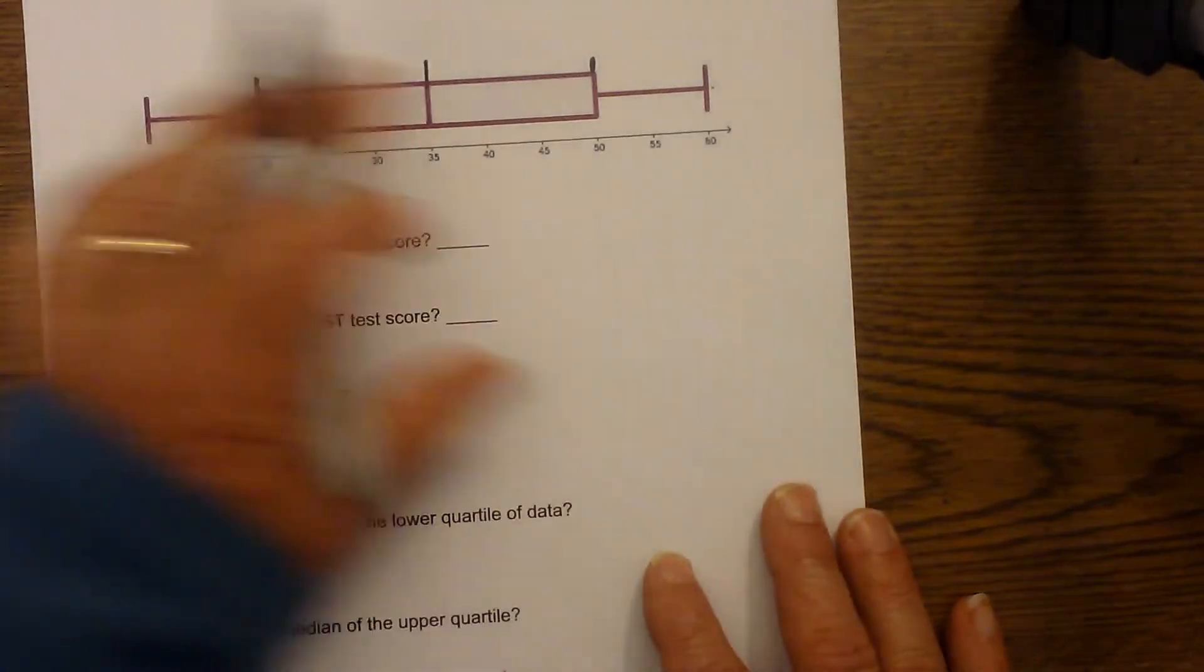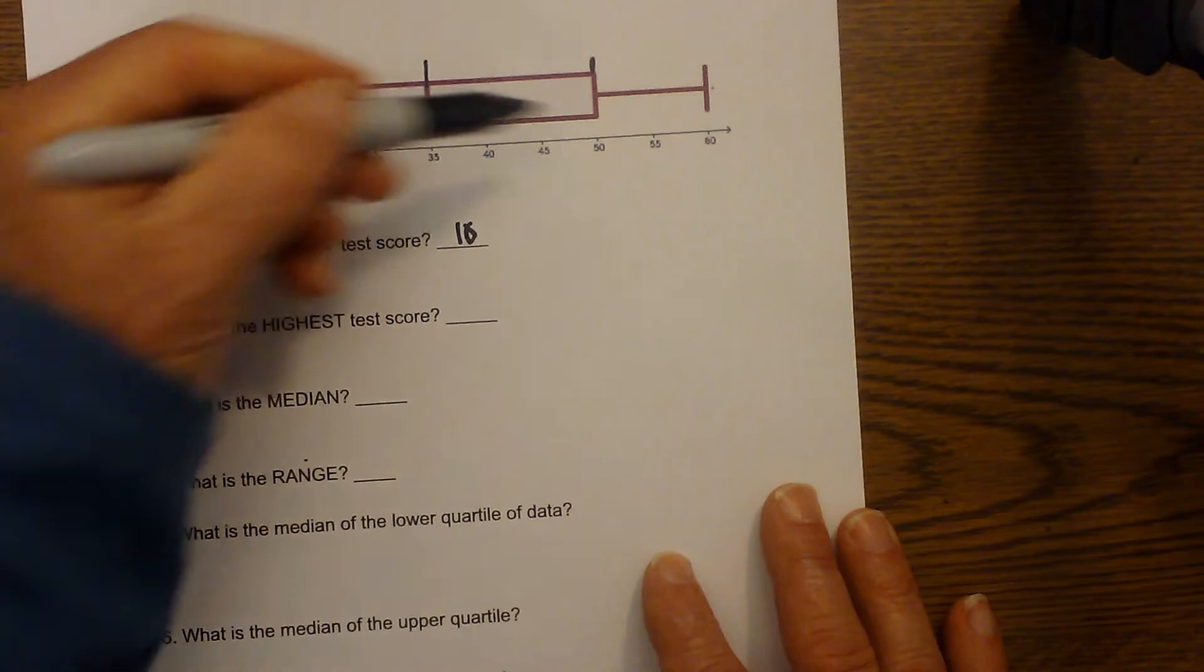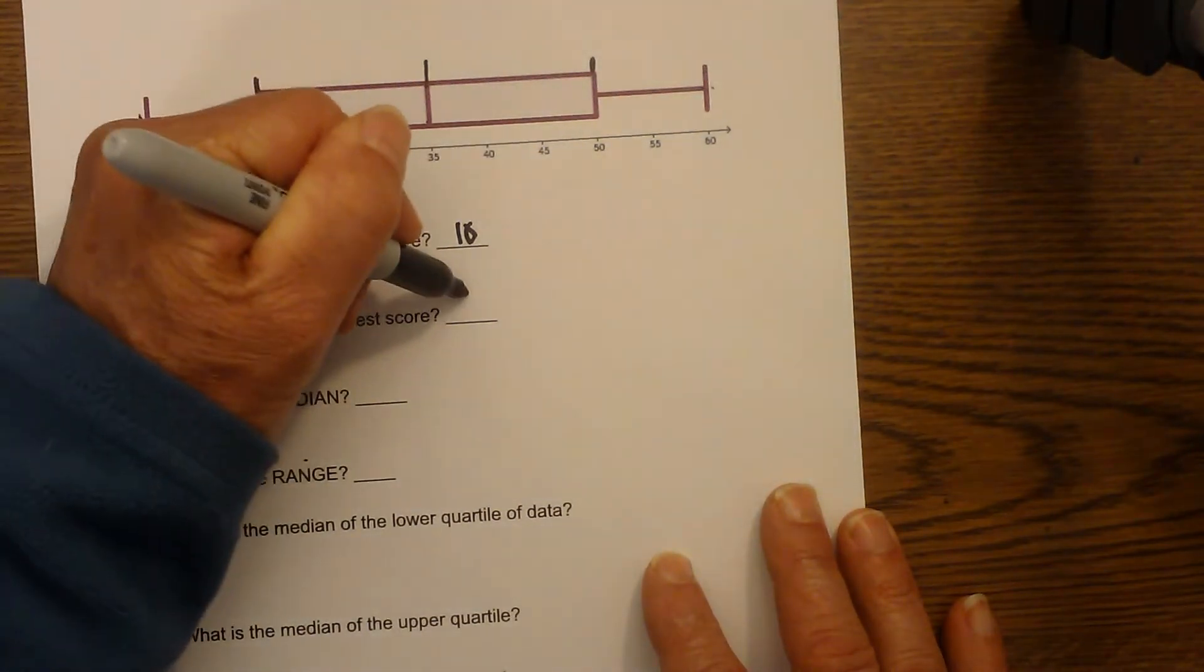So the lowest test score, again, we just go down to the extreme, and that would be 10. The highest test score, the other extreme, which is 60.